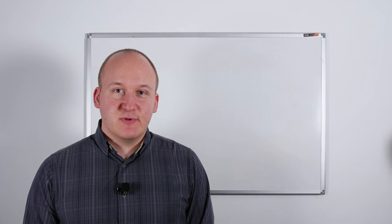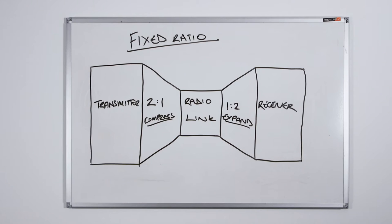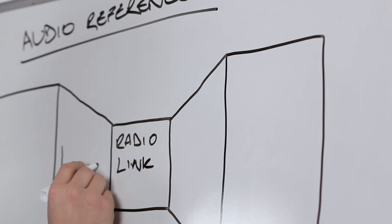The downsides of using fixed ratio companding are that it will compress the signal regardless of signal level. In low level signals the noise floor of the radio signal starts to become apparent. Users of systems that employ fixed ratio companding will notice this as a breathing or pumping effect.